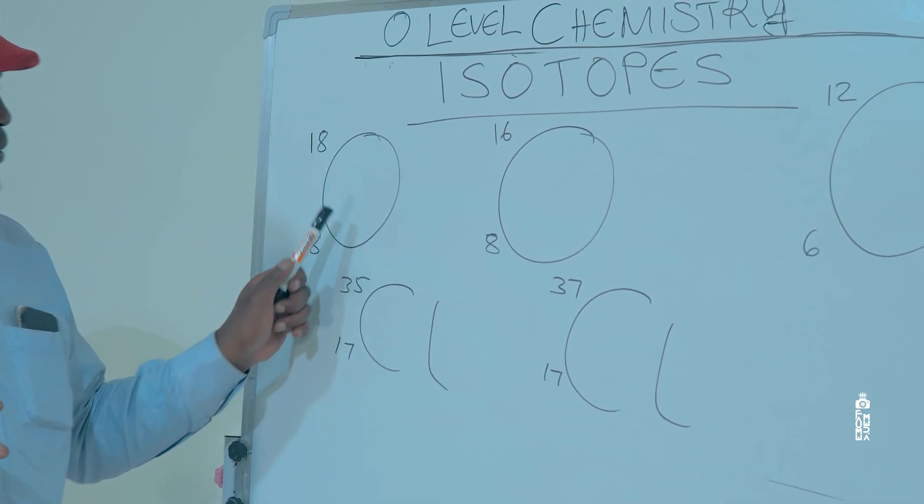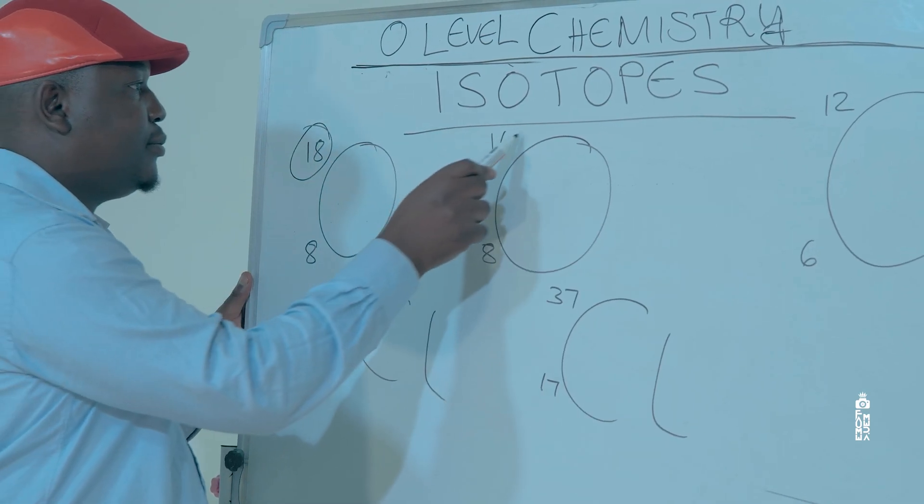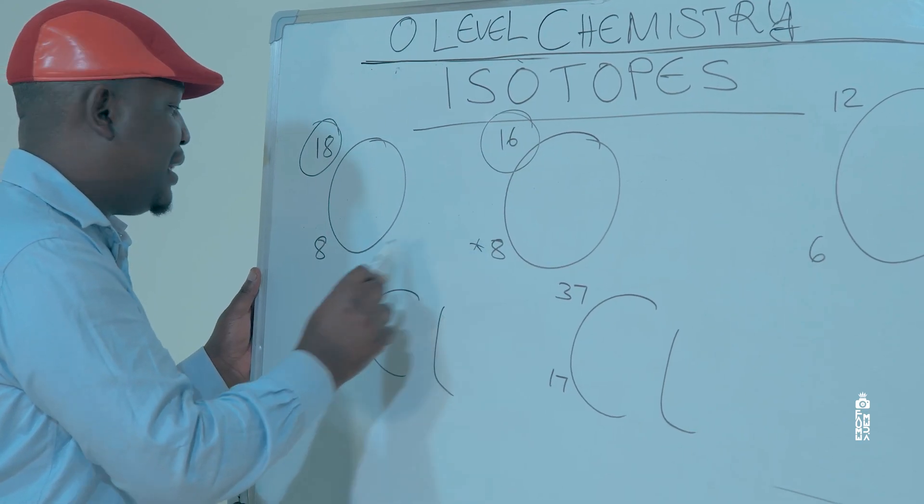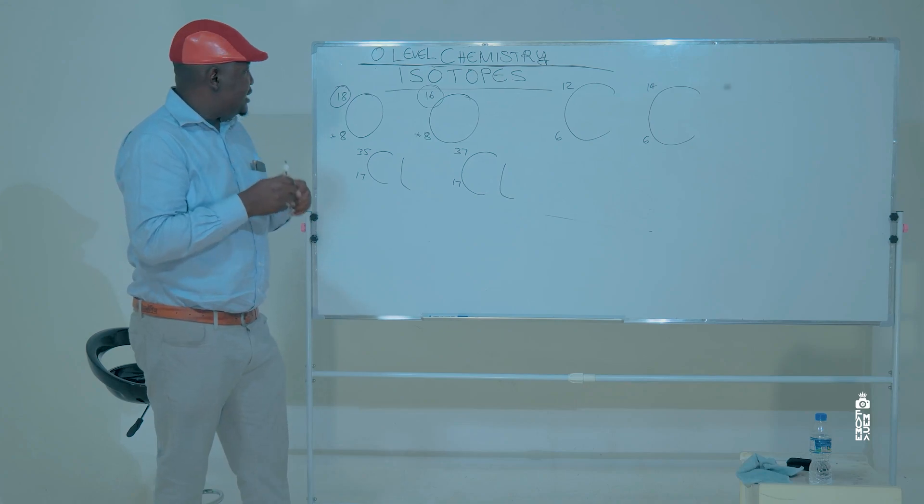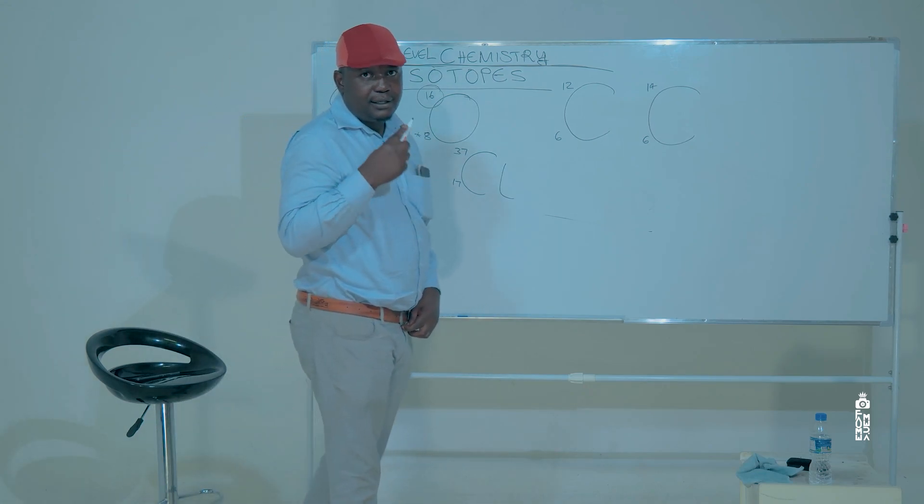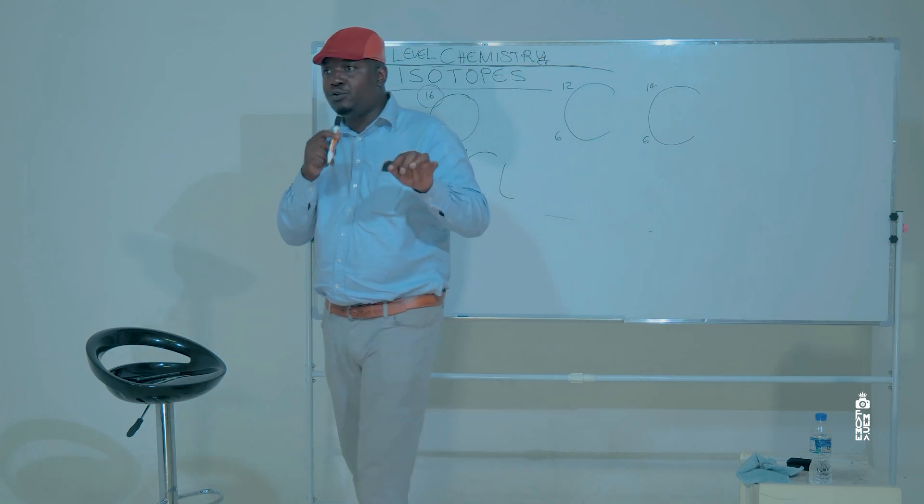The difference between these two oxygen atoms is in the mass numbers. If you check, the proton numbers are the same. So, that which is causing the mass number to be different is the number of neutrons.